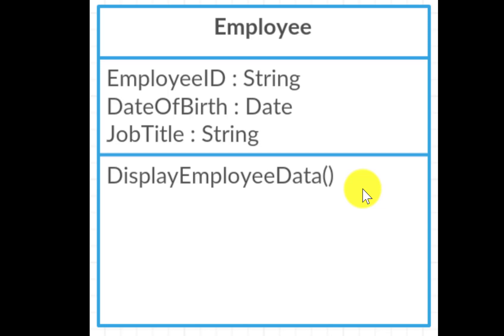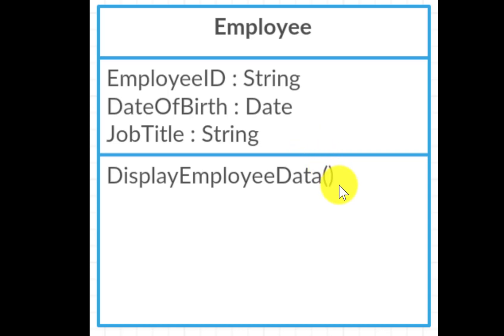The third section of the class diagram contains the methods. These are going to be public as well, and here I've got one method that's going to retrieve all the data for an object for these three properties. A reminder that the method is either a sub, as in this case, or it could be a function. In this example, we don't have any parameters, but we could pass in some parameters if we choose.